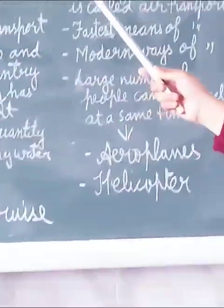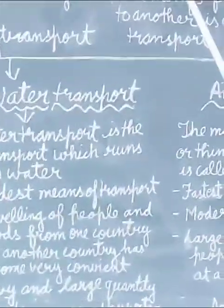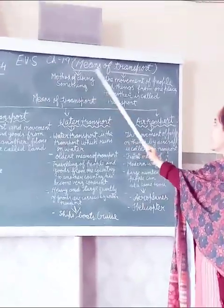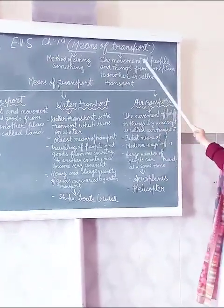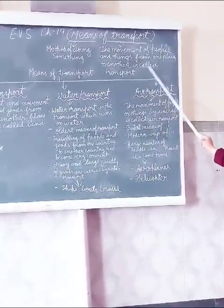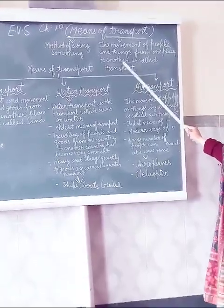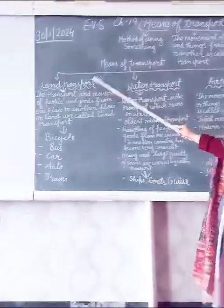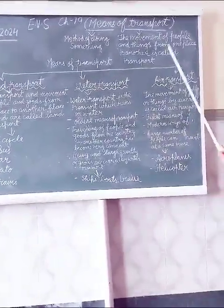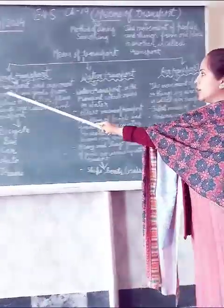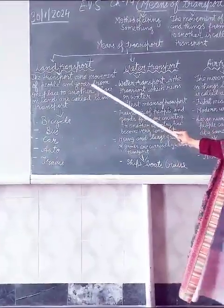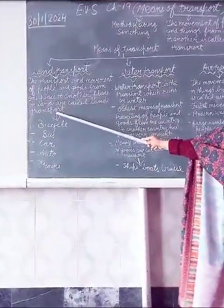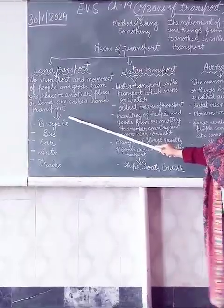Again, means of transport: 'means' means method of doing something. Transport means the movement of people and things from one place to another — that is called transport. There are three means of transport: land transport, water transport, and air transport. Land transport is the movement of people and things from one place to another on land.